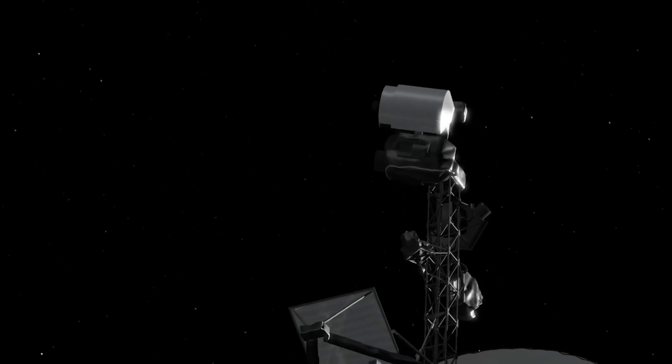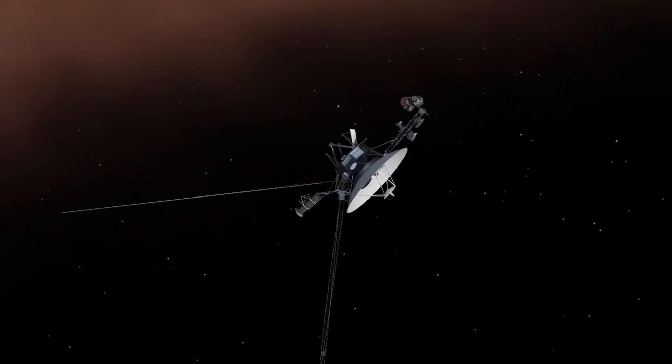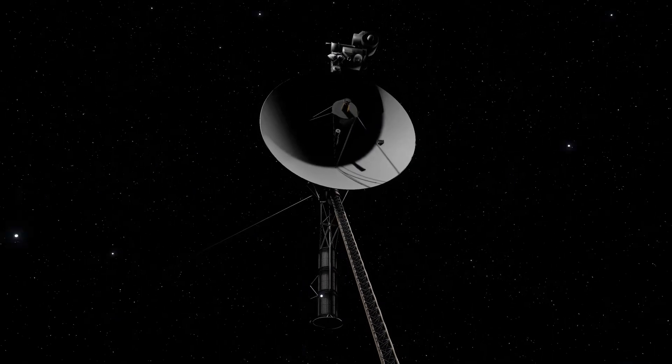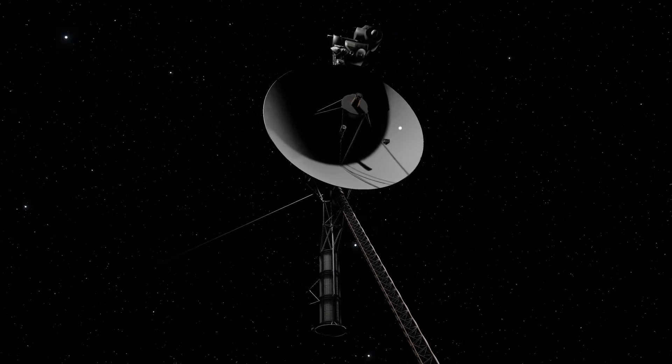If this isn't an error, then what's left? Could Voyager 1 have interacted with something unknown in interstellar space, something that altered its signal in ways we don't yet understand?